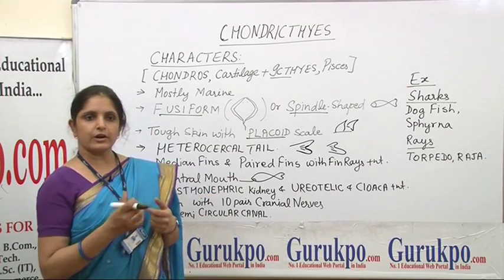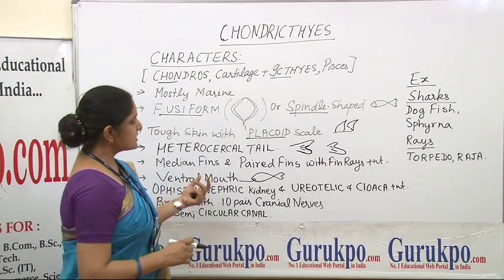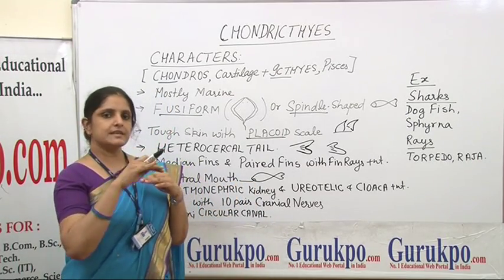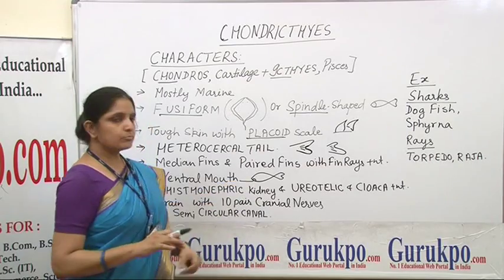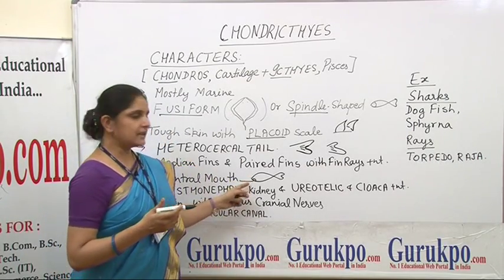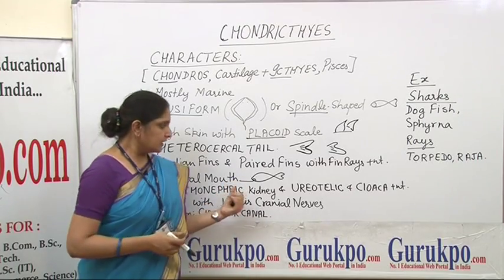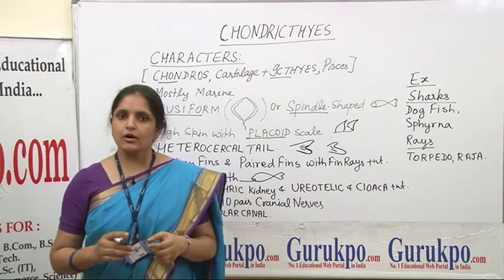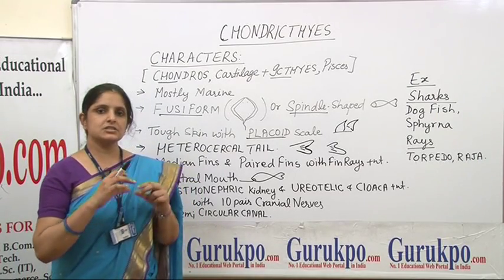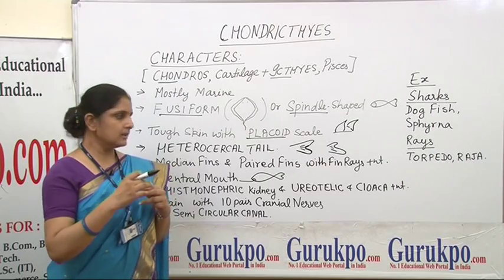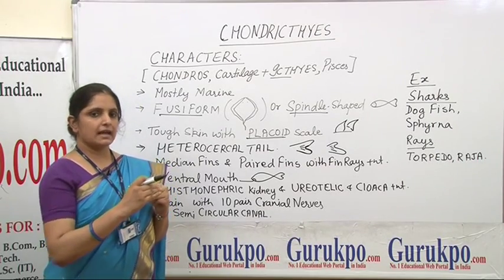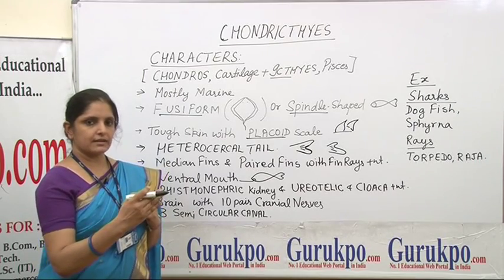Another unique feature of cartilaginous fishes is the presence of a ventral mouth. Ventral mouth means the mouth is present on the lower side of the body, whereas in bony fishes it is present at the terminal end, at the anterior end of the body. Another feature is the presence of the opisthonephric kidney — the kidney is elongated inside the body cavity, extending from the posterior region to almost the anterior region.